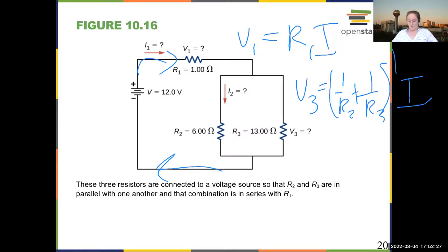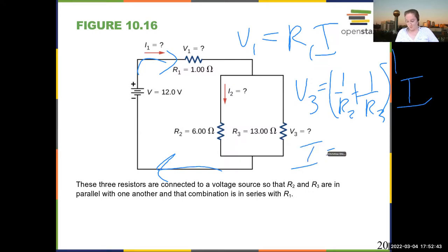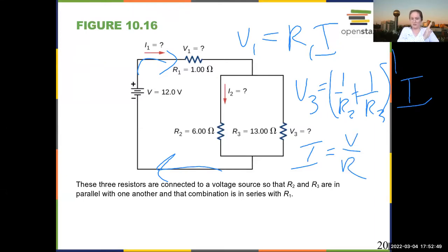Once I know the voltage across elements two and three, and I know their resistances, I can calculate the current going through them because the current is the voltage divided by the resistance. So I can figure out how much current goes through the 6 ohm resistor and how much goes through the 13 ohm resistor.